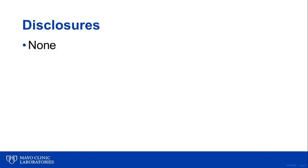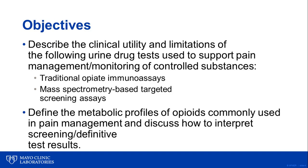I have nothing to disclose. The objectives of my talk are to describe the clinical utility and limitations of traditional opiate immunoassays and mass spectrometry-based screening assays used to support pain management and monitoring of controlled substances. Secondly, to define the metabolic profiles of opioids commonly used in pain management and discuss how to interpret screening and definitive test results.